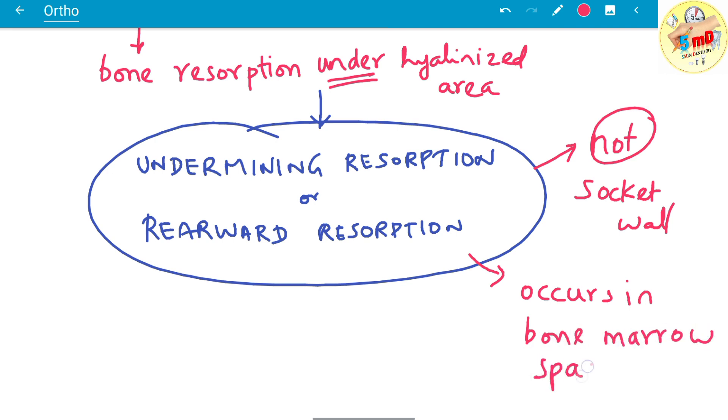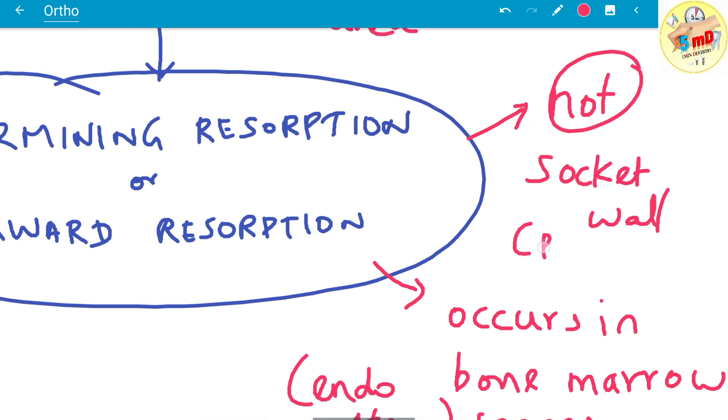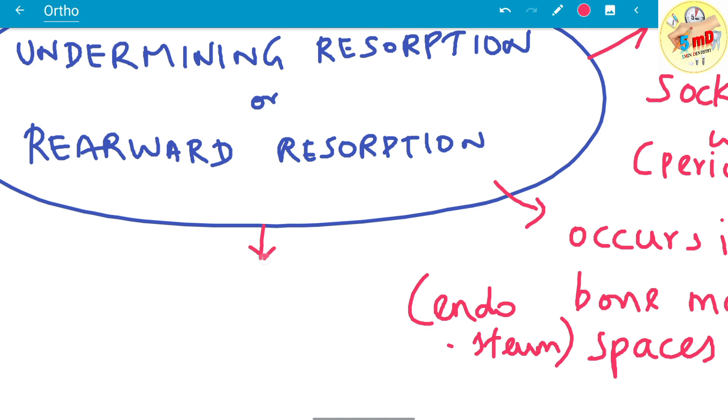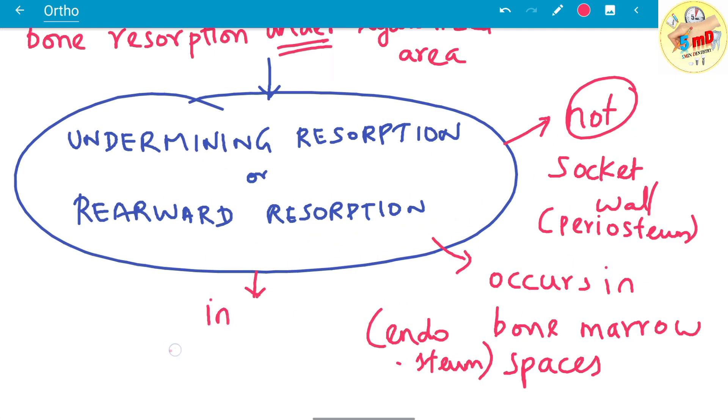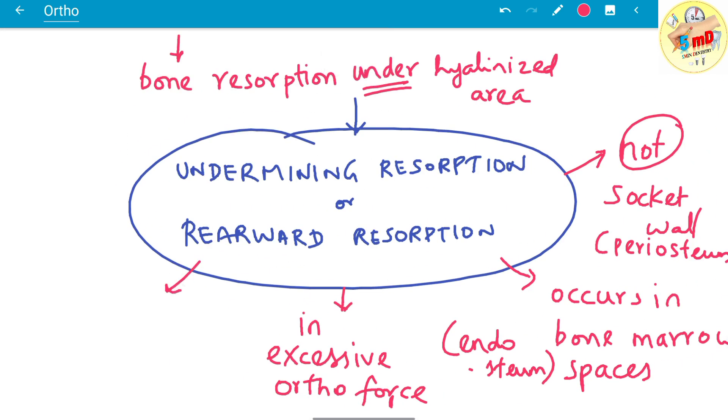Behind the periosteum, that is the endosteal spaces, which is not needed here actually. It is usually of detrimental nature to the tooth and the periodontal ligament. It is not desirable. Also, this type of resorption is seen where we employ excessive orthodontic force.